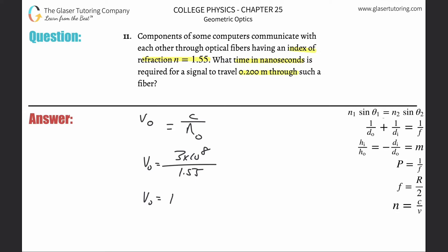3 times 10 to the 8 divided by 1.55. And we get a value here of about 1.94 times 10 to the 8 meters per second. So it's not exactly the speed of light, it's slower.